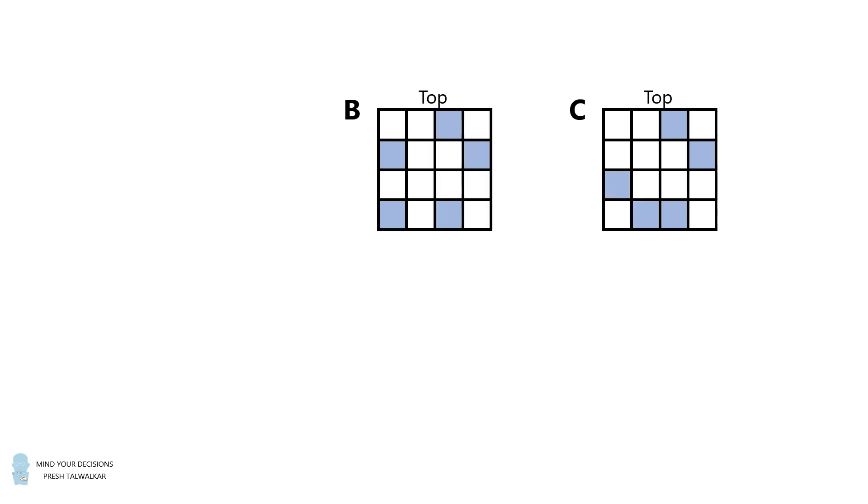Similarly, let's consider if grid B were the answer. Well in this case, grids B and C differ by two squares. So again, grid B cannot be the answer.